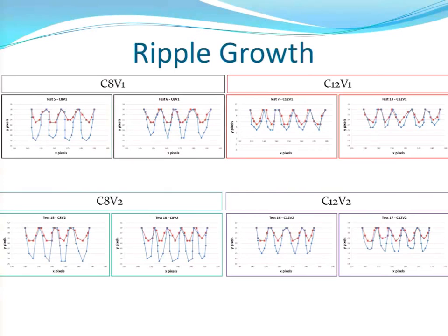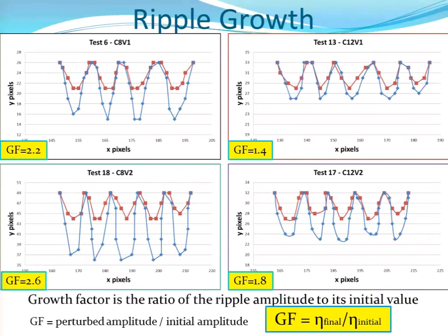This shows the data. The red curves represent the initial ripple growth — we knew what that should correlate to based on the design of our model, but we measured it anyway because each sample came out a little bit differently. We had two different concentrations — less stiff and more stiff gel — and did them at two different velocities. We defined growth factor as the ratio of the current amplitude to the initial value.